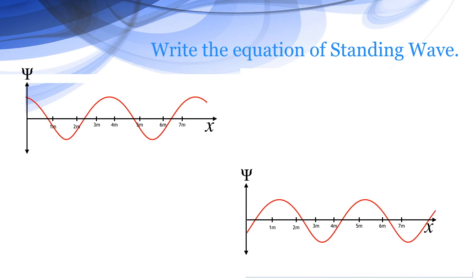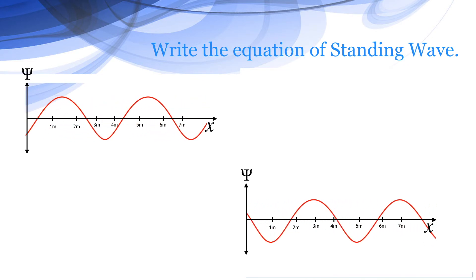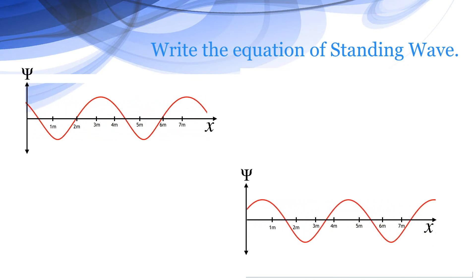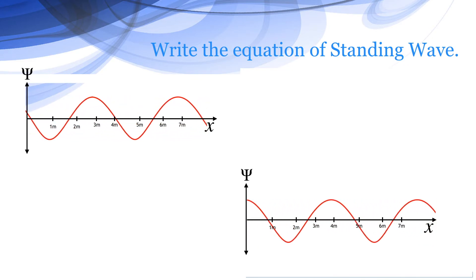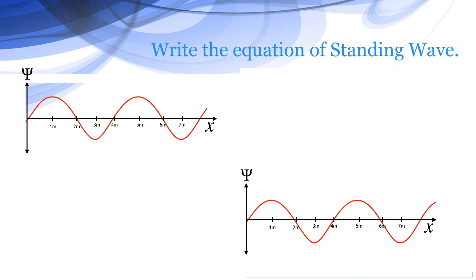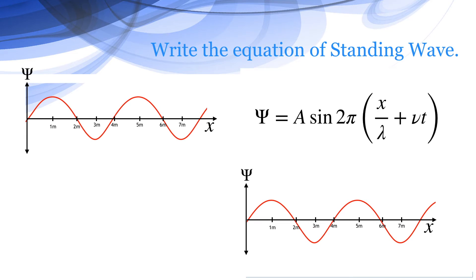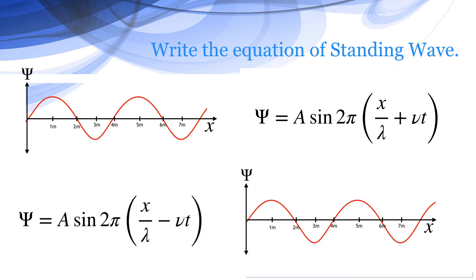A progressive wave can move in two directions: forward or backward. For the forward moving wave, the equation is psi equals A sin of (2pi x / lambda + nu t), and for the backward moving wave, psi equals A sin of (2pi x / lambda - nu t).